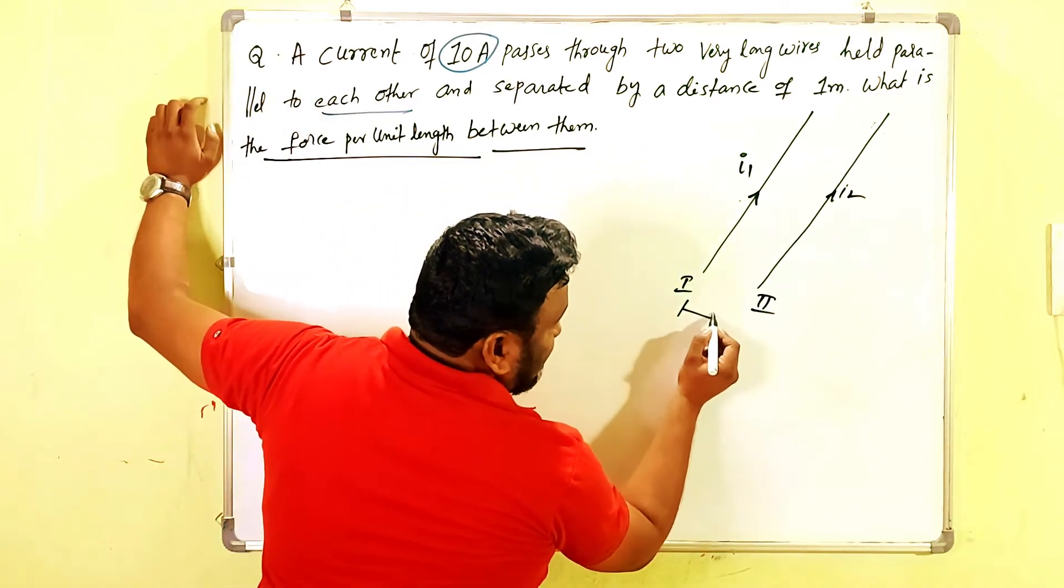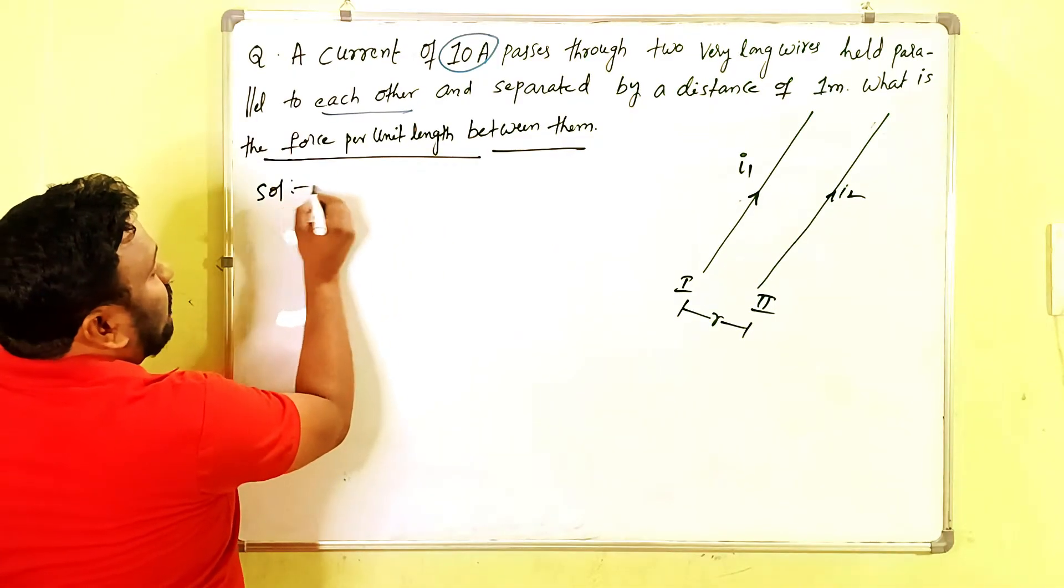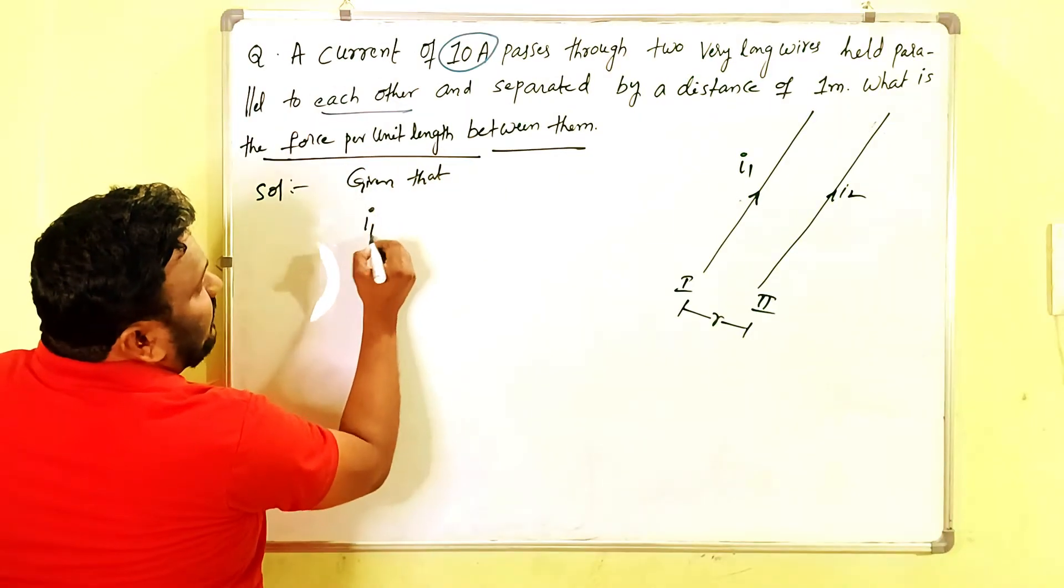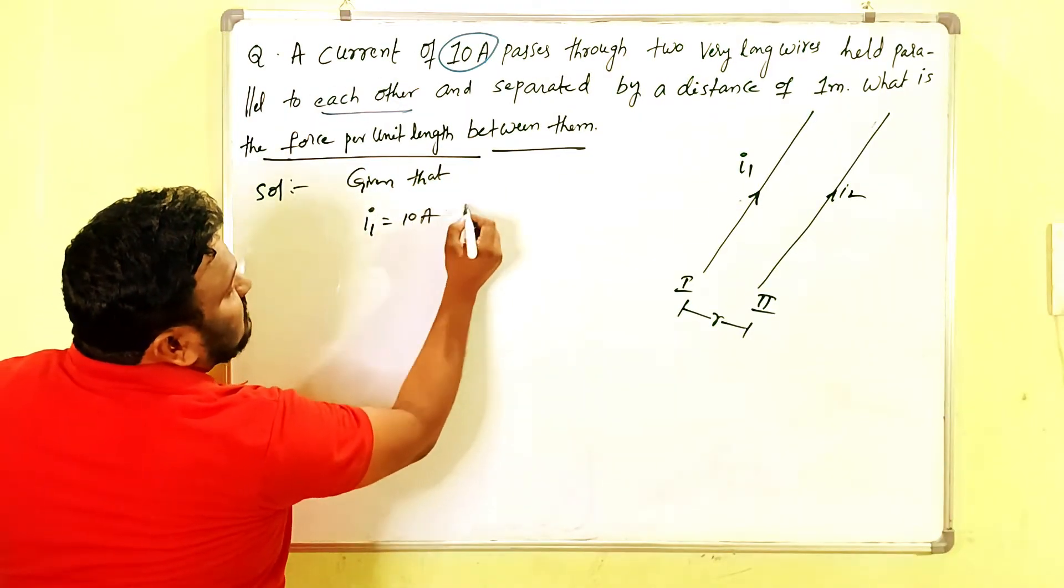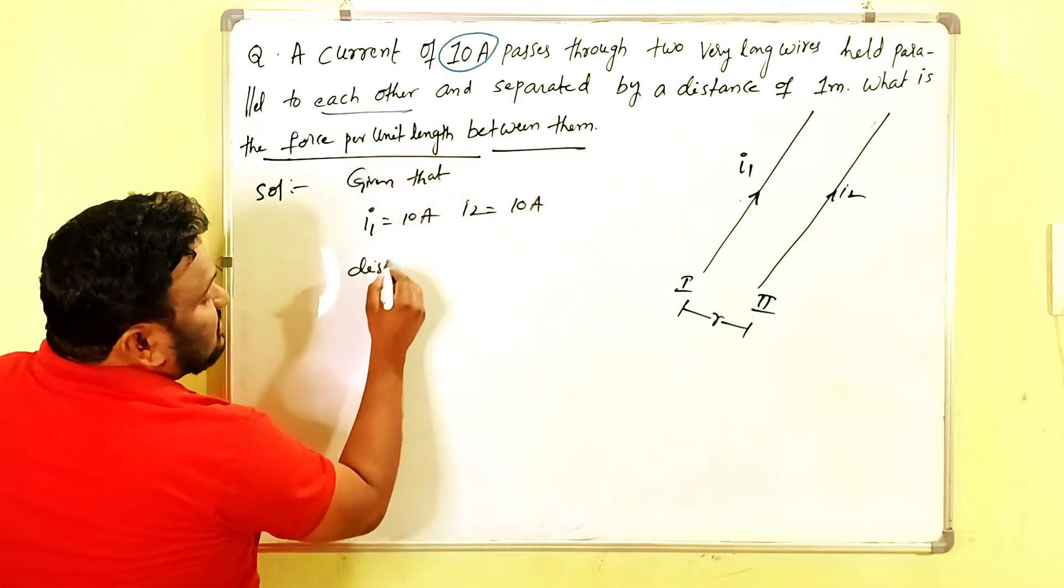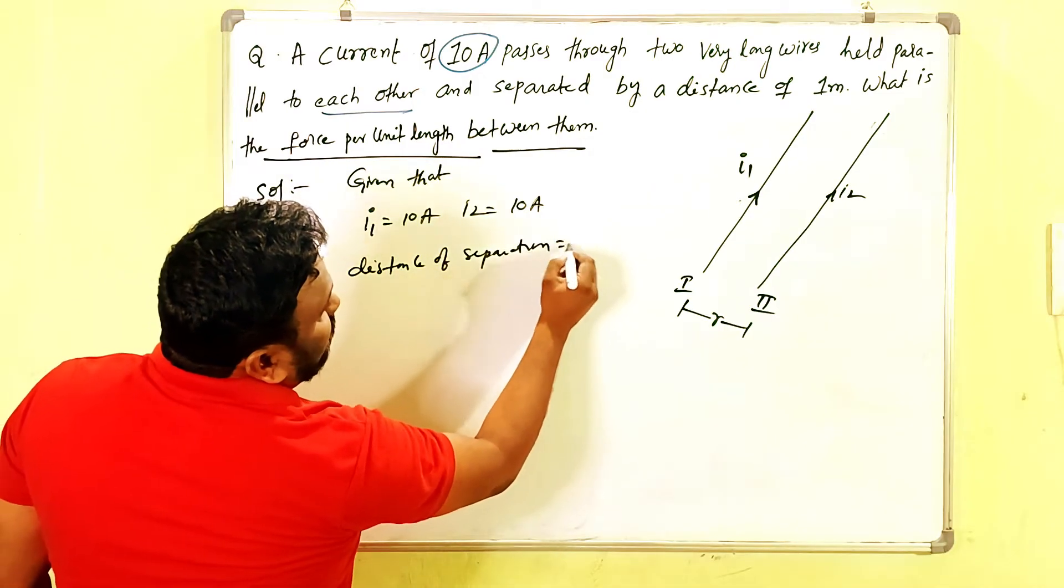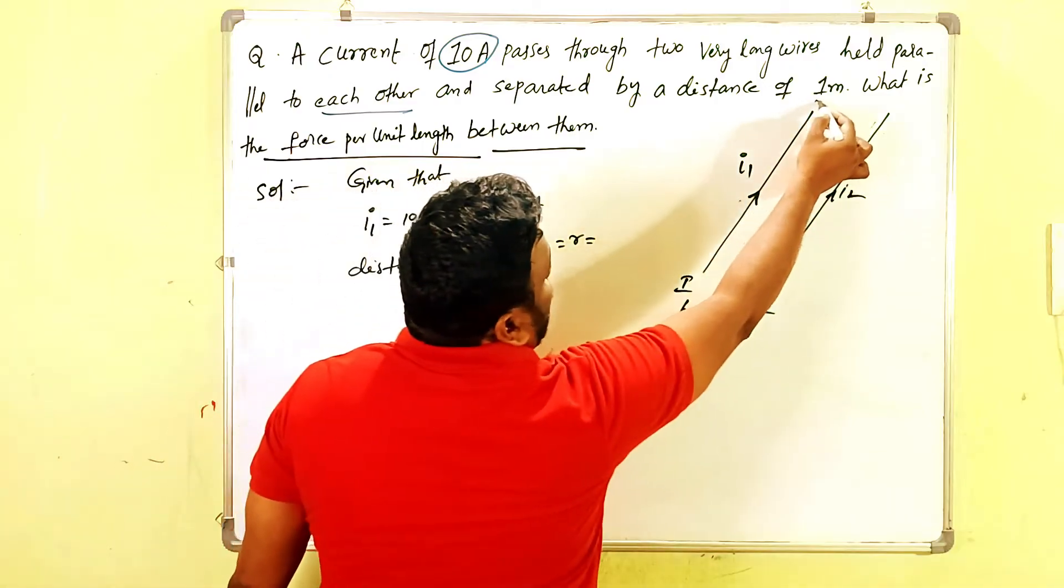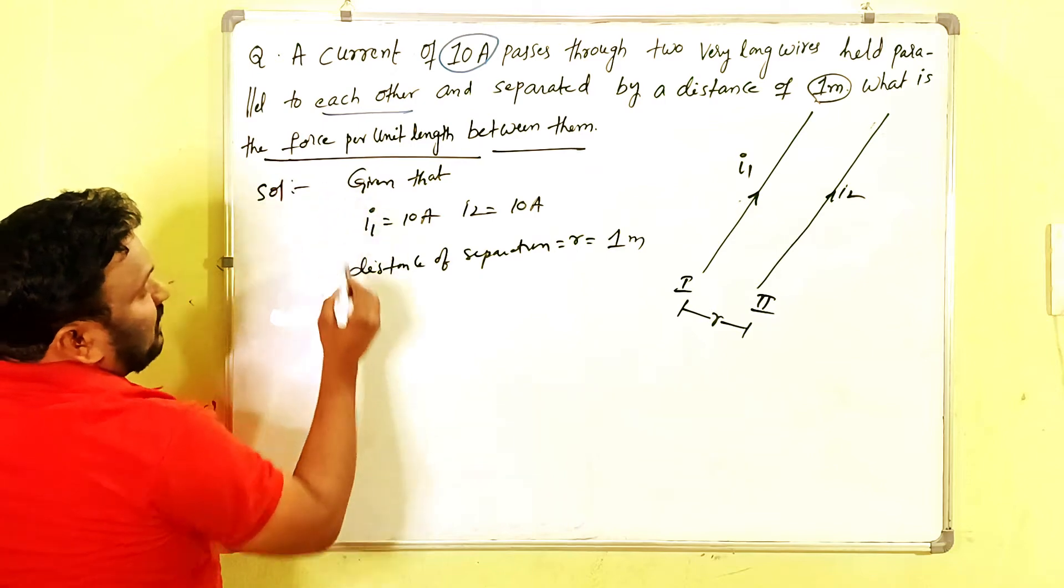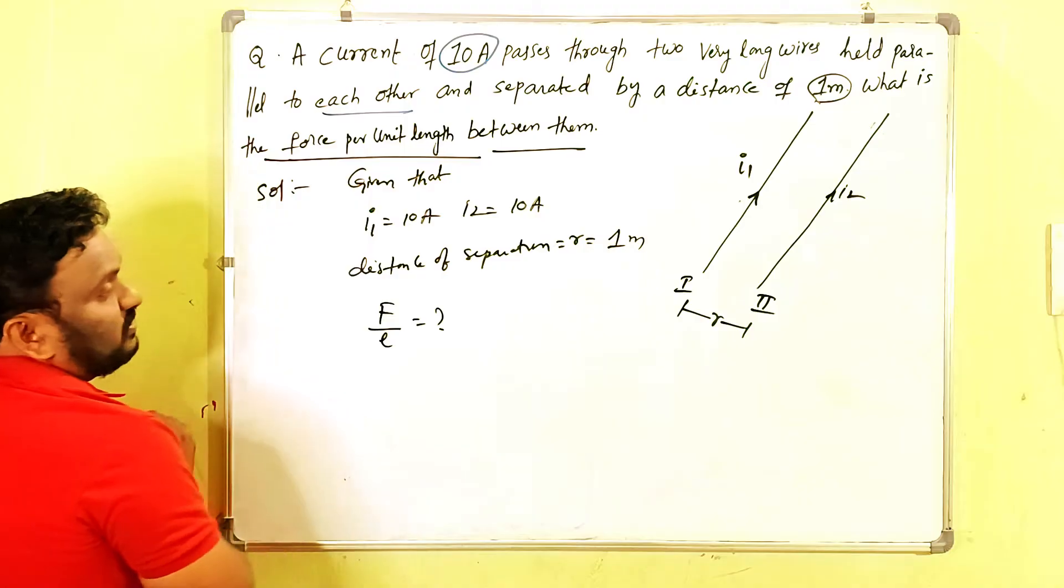And these two parallel conductors are separated by a distance of r. Now given that: i₁ is 10 amperes and i₂ also 10 amperes, and this distance of separation r equals how much? One meter. Then what you have to find out? Force per length. We have to find out F/L. This is the given problem.